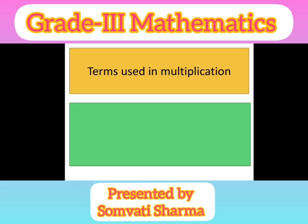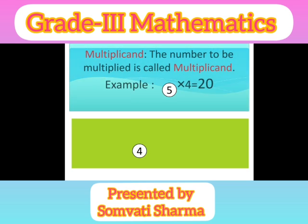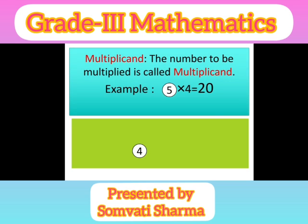Terms used in multiplication. The first term is Multiplicand. The number to be multiplied is called the multiplicand. For example, 5 multiplied by 4 is equal to 20 — here 5 is the multiplicand.